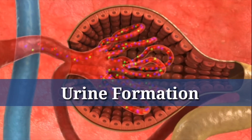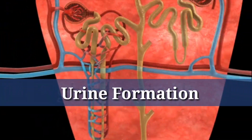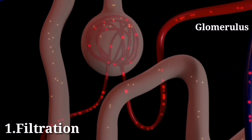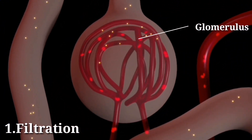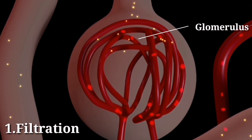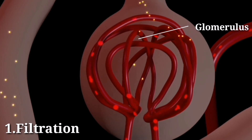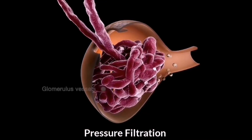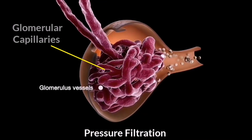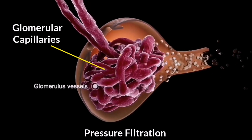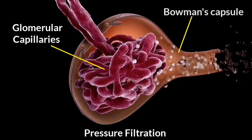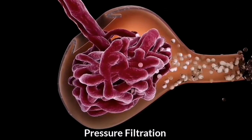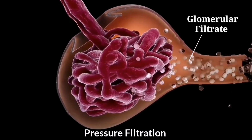The first step is filtration. As blood enters the glomerulus — a network of tiny blood vessels in the renal corpuscle — pressure forces water, waste products, and other small molecules out of the blood and into the Bowman's capsule. This initial filtrate is known as the glomerular filtrate.